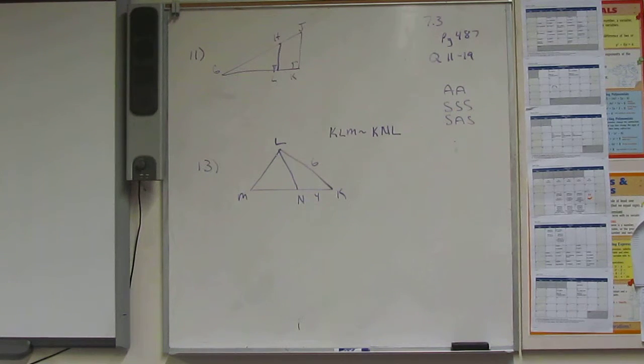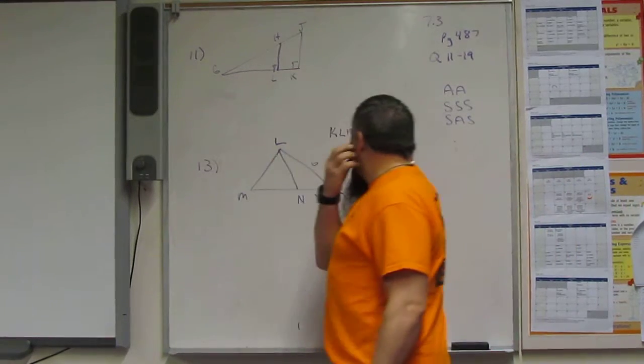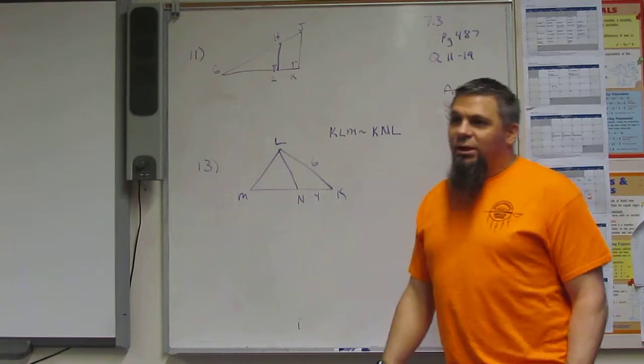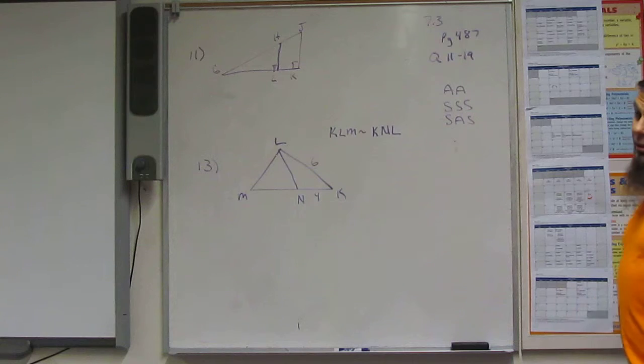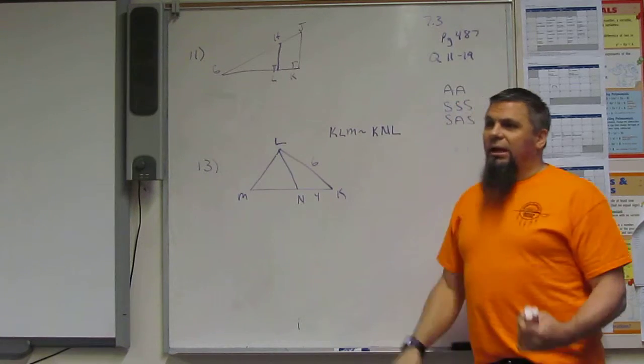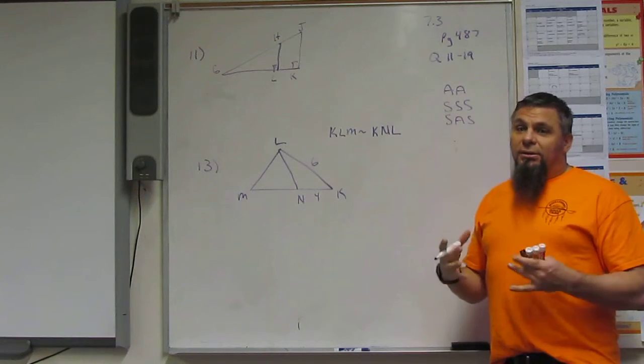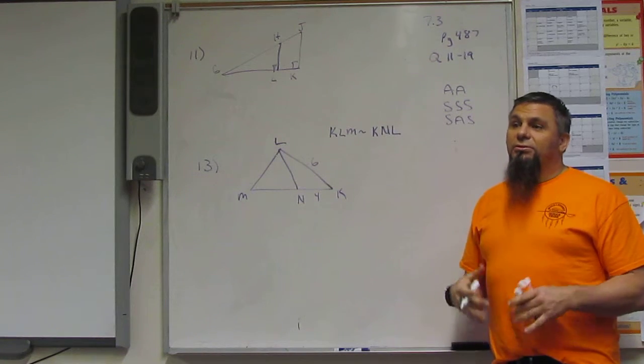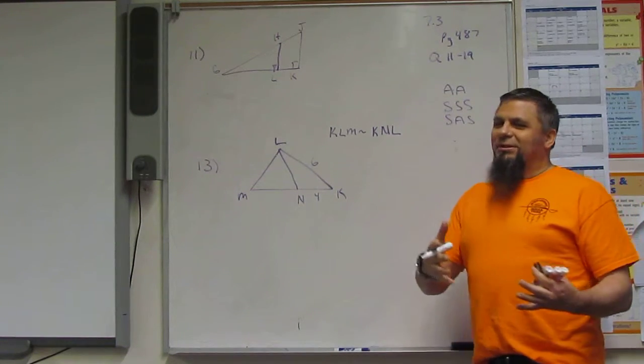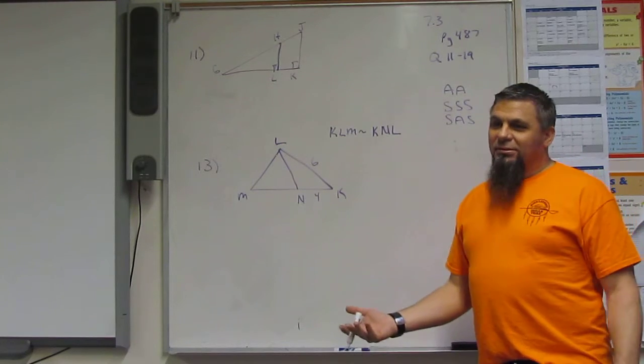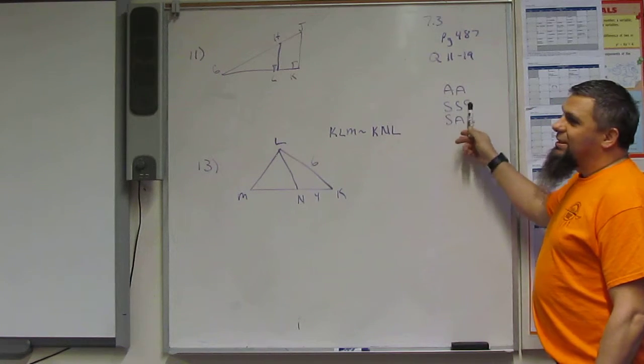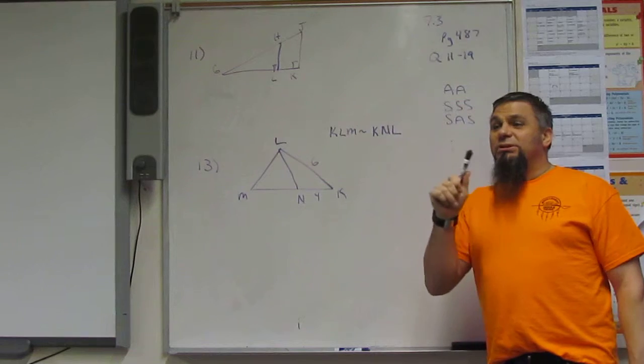Page 487, questions 11 through 19. Number 11, we're supposed to tell whether triangles are similar. We need to know a couple of similarity rules. Three similarity rules you need to know: Angle-Angle. If two angles are congruent, then the triangles are similar. It's basically based on angle-angle-angle, but if two angles are congruent, the third angle has to be congruent, right? So it comes down to two angles.